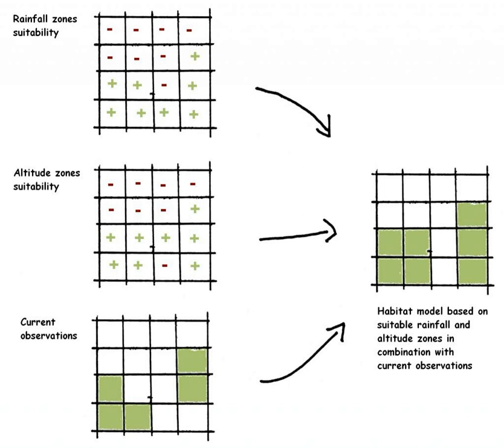In contrast, mechanistic or process-based models assess the bio-physiological aspects of a species to generate the conditions in which the species can ideally persist, based on observations made in controlled field or laboratory studies. As such, it aims at modeling the fundamental niche of the species.